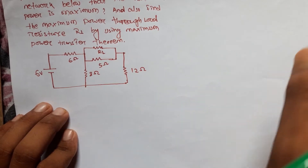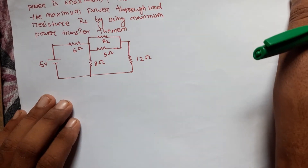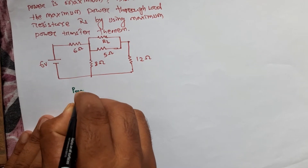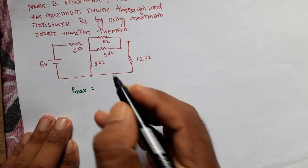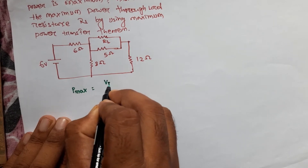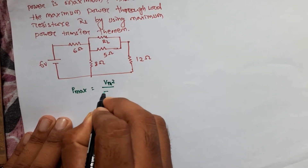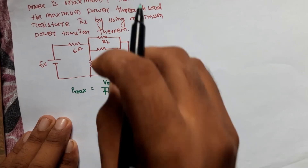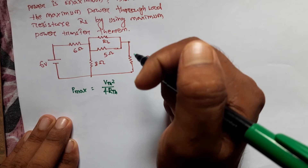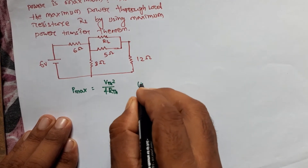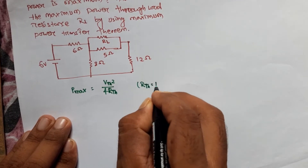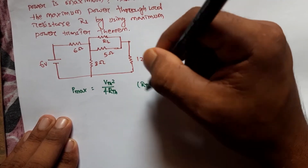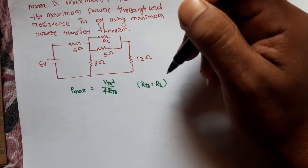In the maximum power transfer theorem, the maximum power is equal to Vth squared divided by 4·Rth. The condition for maximum power transfer is Rth equal to RL. So we need to find the Thevenin equivalent resistance and the Thevenin equivalent voltage.